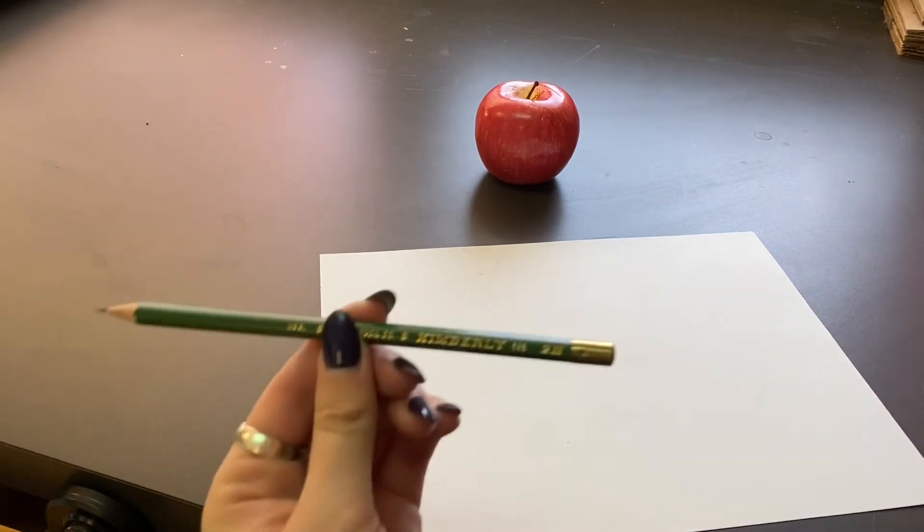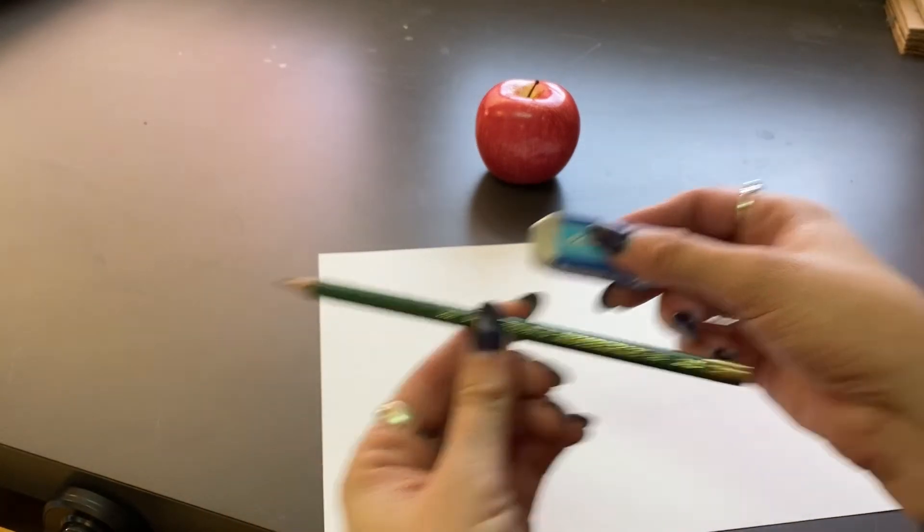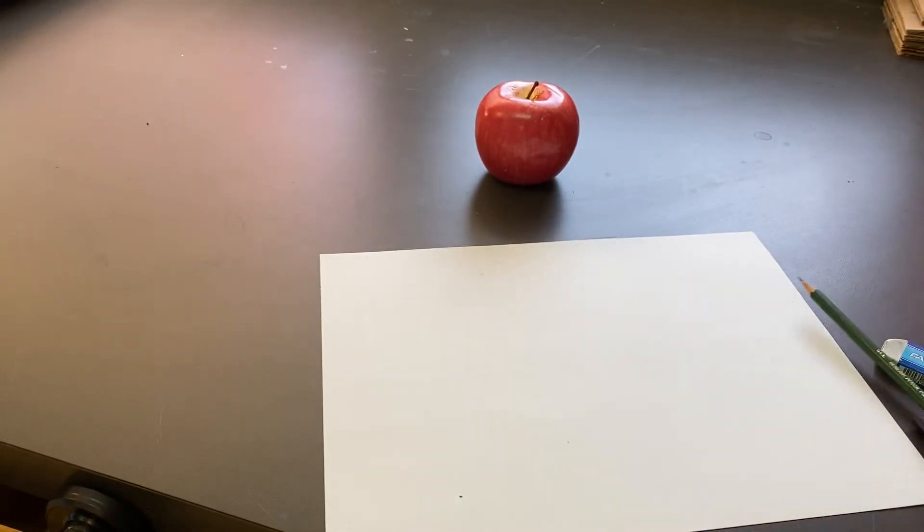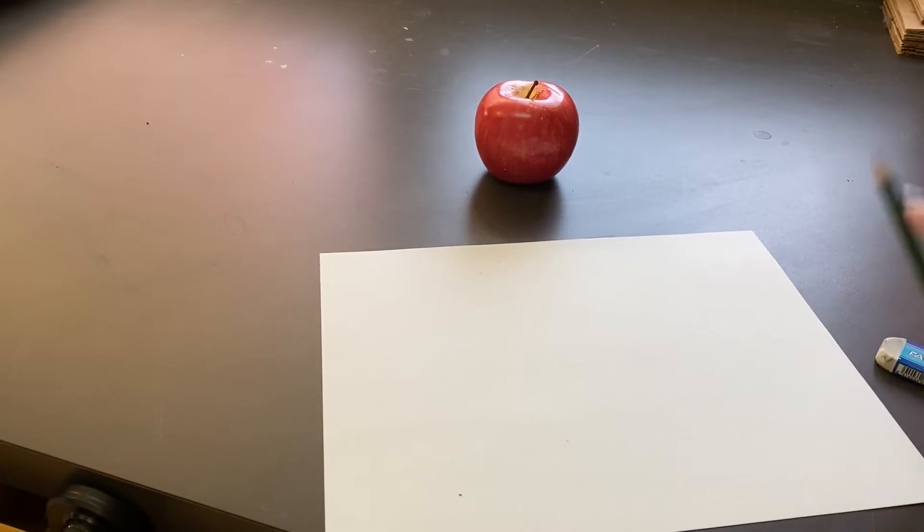When we're doing sketches you want to use a lighter value and a pencil that has a harder graphite in it. So I normally use a 2H or a 4H pencil when sketching. You also want to have an eraser because when we are sketching we draw lightly and you want to draw light until it's right.